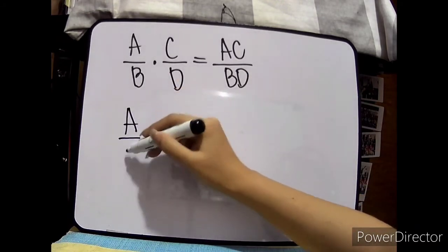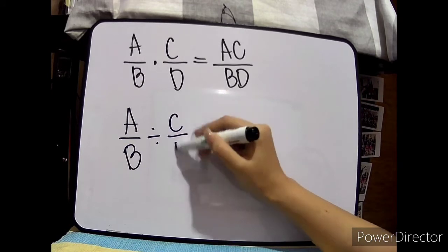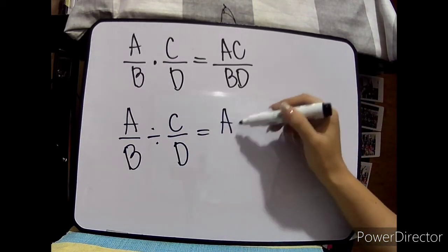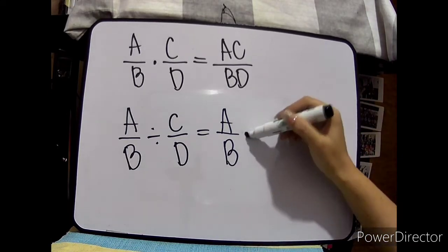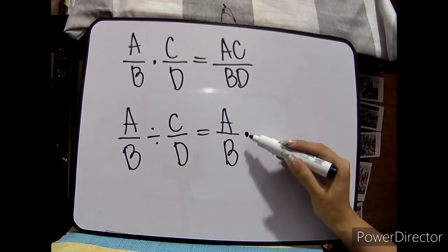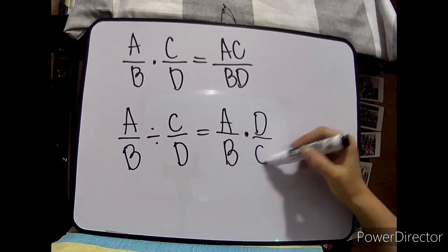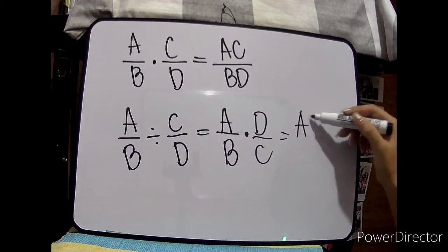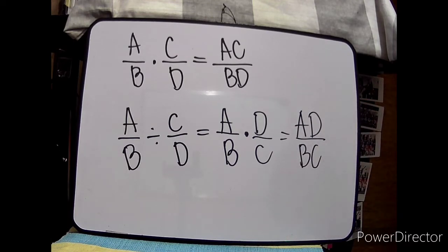If we do division, what happens is: reciprocal your divisor and change your operation into multiplication. So the divisor c over d becomes d over c. Then let's apply what we did since it becomes multiplication. So a times d over b times c — or as I said, cross products.